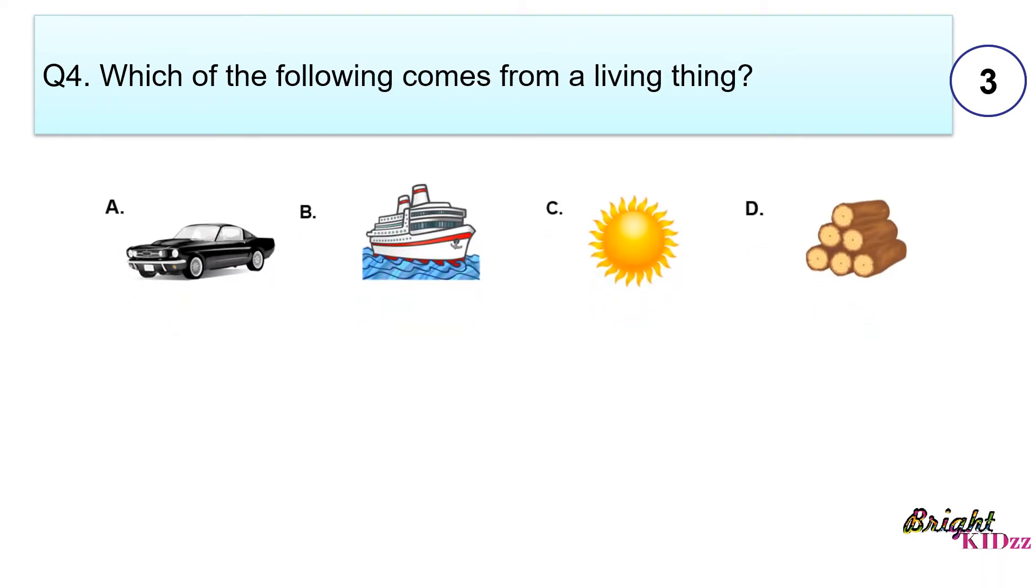Which of the following comes from a living thing? A. Car B. Ship C. Sun D. Wood. Answer D. Wood. Because wood comes from plants and plants are living things.